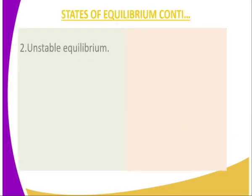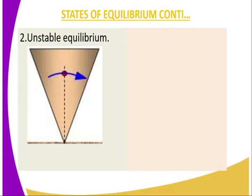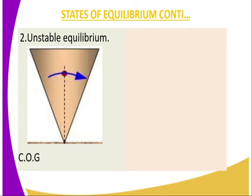What about unstable equilibrium? Considering the same triangle, but in this case it is an inverted one — upside down — and therefore we have the base area being the tip, and the line of action from the center of gravity, which is up there, acting along this very small area. So once we tilt this triangle at a very slight angle, you will find that it does not go back to its initial position — it topples. This indicates that it is in an unstable state of equilibrium. Once again, we consider the position of the center of gravity, the line of action, and the base area: once we tilt it and the line of action is outside the base area, then it is unstable.